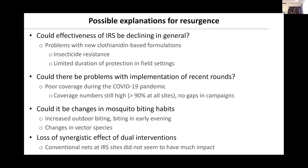Possible explanations include insecticide resistance, or limited duration of protection of the new formulations compared to what is documented. These are questions we don't yet have answers to. Another possibility is problems with implementation of the recent rounds — some were rolled out during the COVID-19 pandemic, which could have created gaps. However, coverage at these sites was greater than 90%, so implementation coverage was still very good. There could also be changes in mosquito biting habits — some of these questions we hope to answer in the near future.